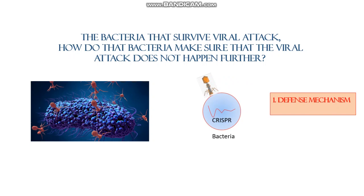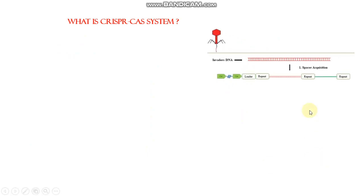The CRISPR-Cas9 system was discovered inside bacteria just a couple of years back. The mechanism of the CRISPR-Cas9 system is similar to immune memory — just as humans have memory T-cells that can recognize a first infection event. CRISPR-Cas9 is assembled and contains a special acquisition, which is a small portion of DNA sequence copied from viral DNA. This assembly also contains repeat sequences as well as a leader sequence.